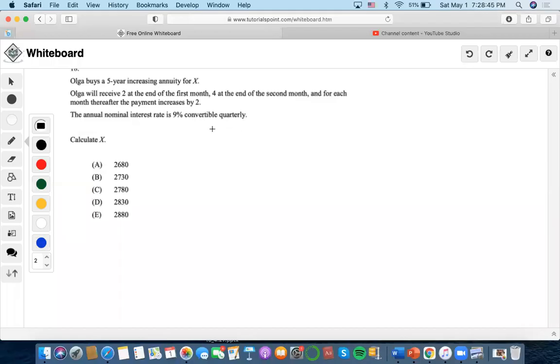Okay, so we're going to see that Olga buys a five-year increasing annuity of X, and will receive 2 at the end, 4, and then so on and so forth until the payment increases by 2, and the annual nominal interest rate is 9% convertible quarterly. Okay, well, let's solve this.